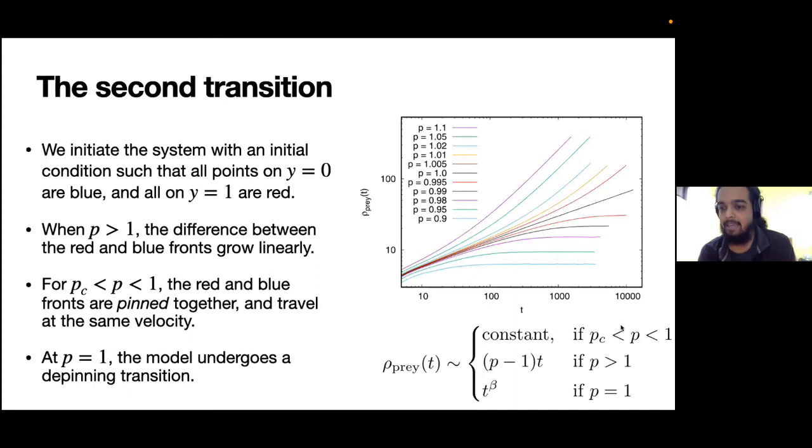This can also be seen in the following diagram if we just look at the number of prey as a function of time. When p is between pc and one, then the density of prey tends to a constant. When it is greater than one, it grows linearly in time. However, at p equal to one we see that there's a power law increase in the density of prey, and the exponent that we found here, β, is very close to 1/3.